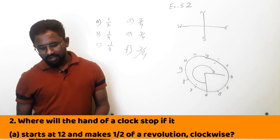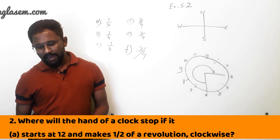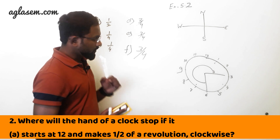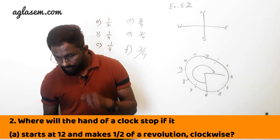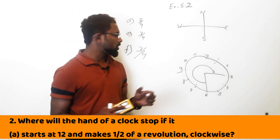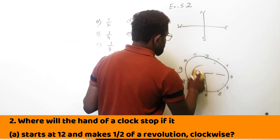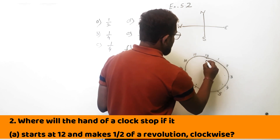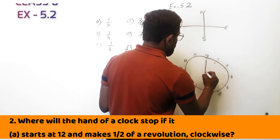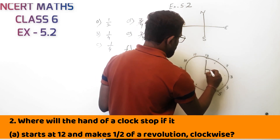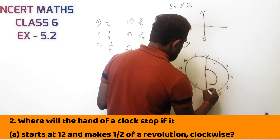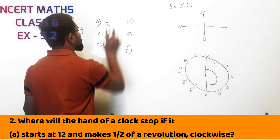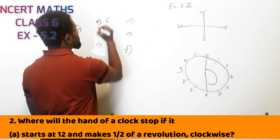Question 2: Where will the hand of a clock stop if it starts at 12 and makes half of the revolution clockwise? It is starting from 12 and making half of the revolution, so the answer will be at 6.